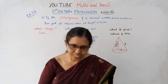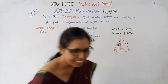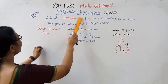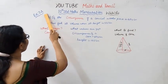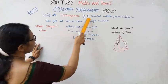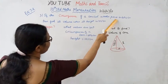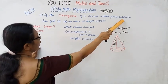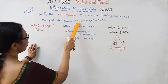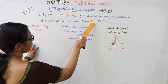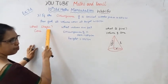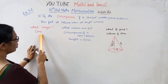Hello students, welcome to Max Tamil channel. 10th standard, Max mensuration, exercise 7.2, third sum. If the circumference of a conical wooden piece is 484 cm, then find its volume when its height is 105 cm.